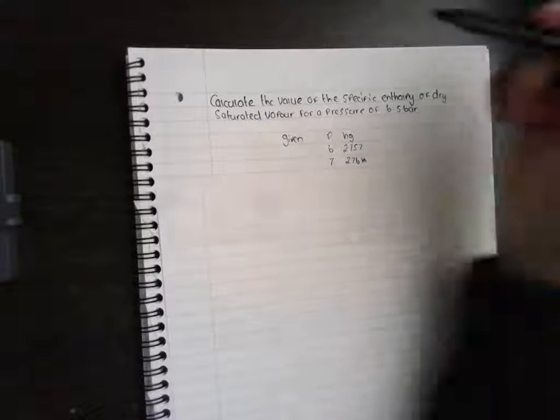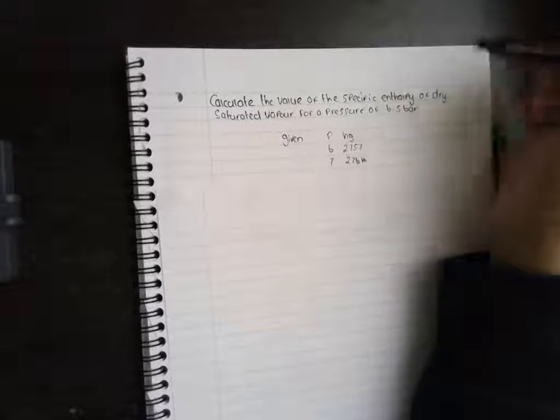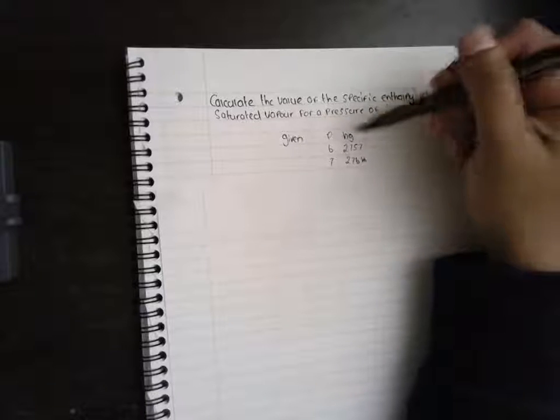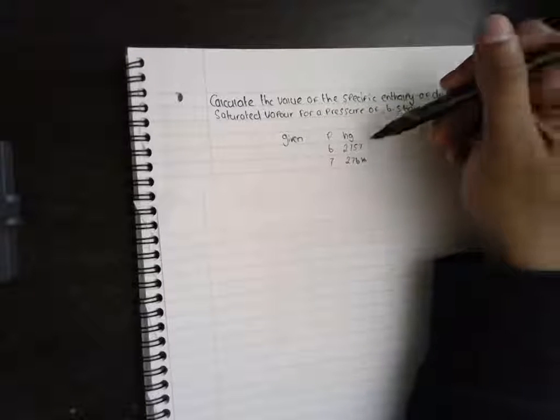So I've got: Calculate the value of the specific enthalpy of dry saturated vapour for a pressure of 6.5 bar. I've been given these values where I've got the pressure here and the specific enthalpy of the saturated vapour here.